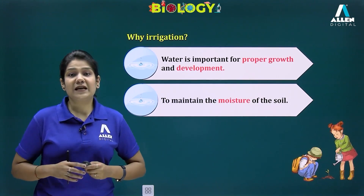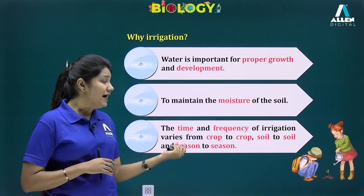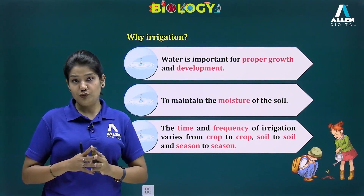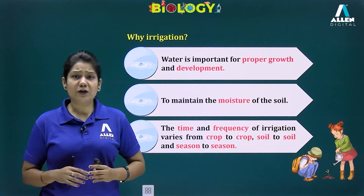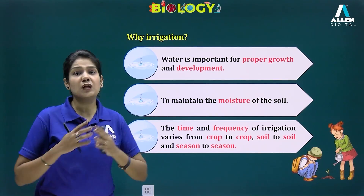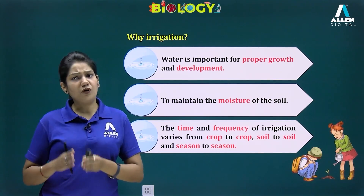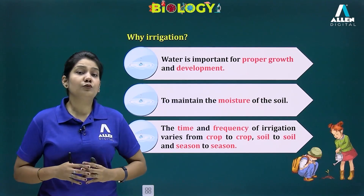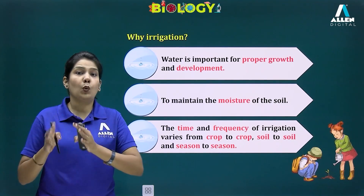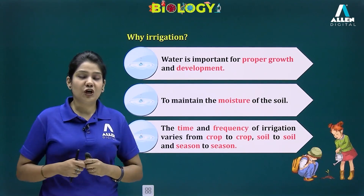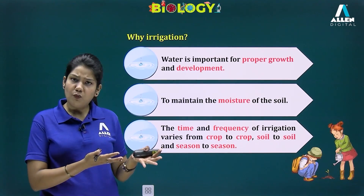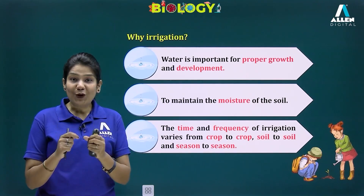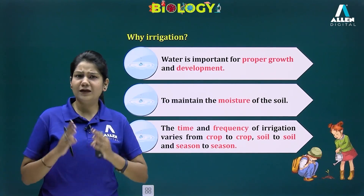The time and frequency of irrigation varies from crop to crop. As discussed in earlier lectures, kharif crops require a lot of water while rabi crops don't require as much. Irrigation also varies from soil to soil — if a crop is sown in loamy soil it requires a moderate amount of water.